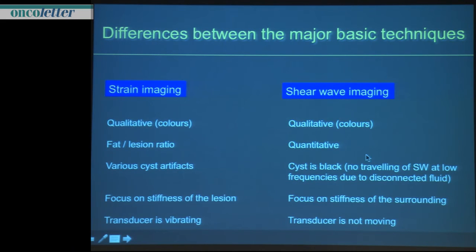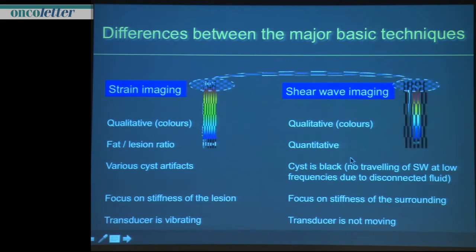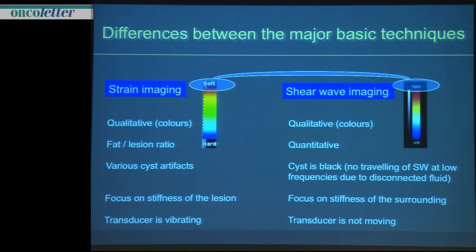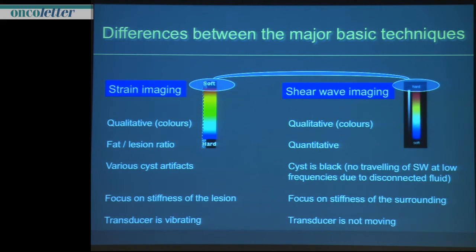Both major techniques can be used qualitatively and quantitatively. You can express values in kilopascals for the supersonic system. The cyst appearances differ — there are typical artifacts in the strain technique, and the cyst is black in the shear wave technique. In strain imaging, focus is on stiffness within the lesion, while in shear wave imaging the focus is on stiffness in the surrounding tissue.